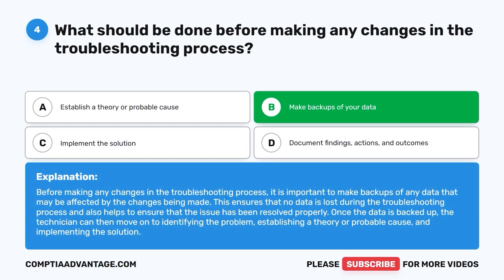Before making any changes in the troubleshooting process, it is important to make backups of any data that may be affected by the changes being made. This ensures that no data is lost during the troubleshooting process and also helps to ensure that the issue has been resolved properly. Once the data is backed up, the technician can then move on to identifying the problem, establishing a theory or probable cause, and implementing the solution.